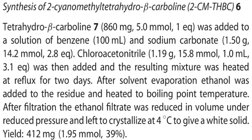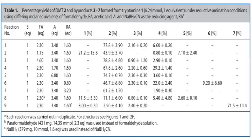The other synthesis given is for 2-cyanomethyl tetrahydro-beta-carboline — compound six — another one I can find no mention of in nature. To synthesize it: 860 mg of tetrahydro-beta-carboline (compound seven) was added to a solution of 1.5 grams of sodium carbonate in 100 mL of benzene. Then 1.19 grams of chloroacetonitrile was added and the mixture was heated at reflux for two days. After solvent evaporation, ethanol was added, heated to boiling, filtered, concentrated, and left to crystallize at 4°C to give a white solid — with a pretty poor yield.